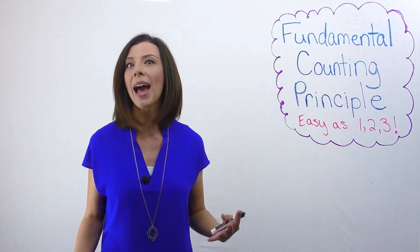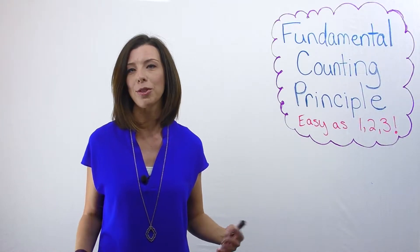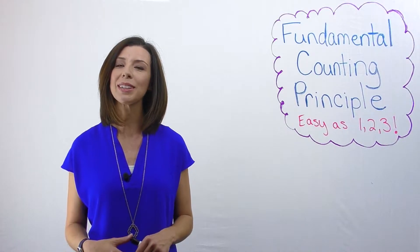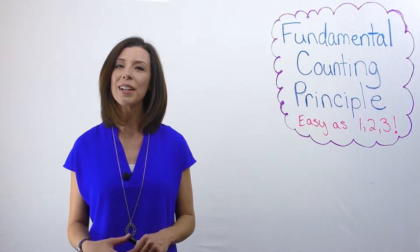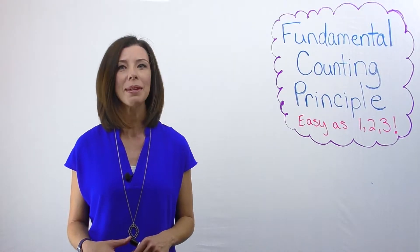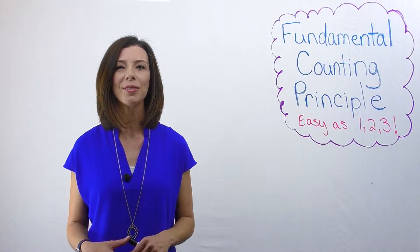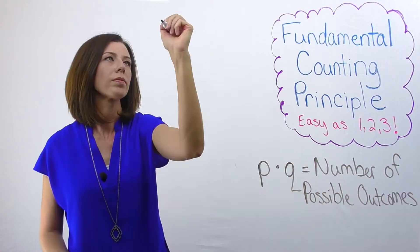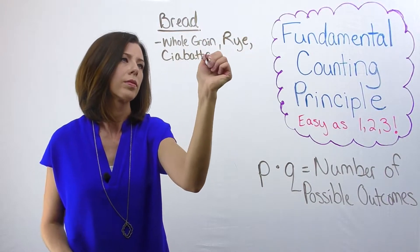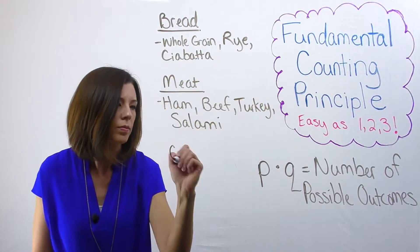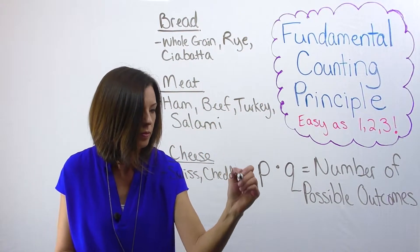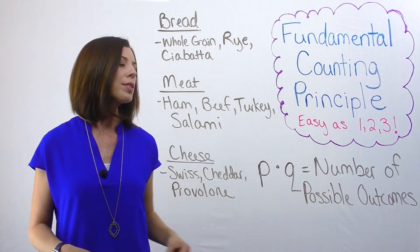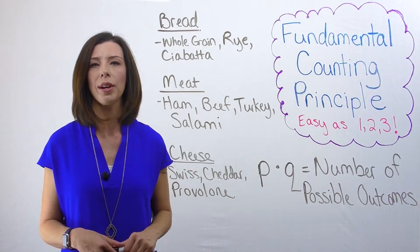Here's what it says in very math language: if there are P possibilities for one event and Q possibilities for a second event, then the number of outcomes for both is P times Q. In other words, P times Q equals the number of total possible outcomes.